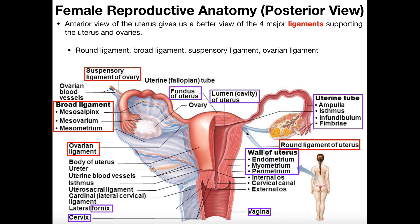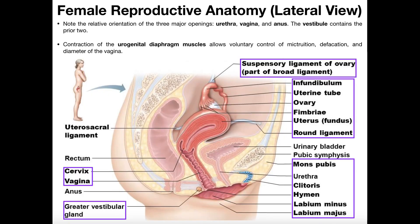Originating on the same point but working its way downward is the round ligament of the uterus. There is a left and a right of these. What the round ligaments do is anchor the front part of the uterus to the anterior abdominal wall. Then we have the utero-sacral ligament, which anchors the posterior side of the uterus to the sacrum — the sacrum being one of the lower parts of the vertebrae just above the coccyx.